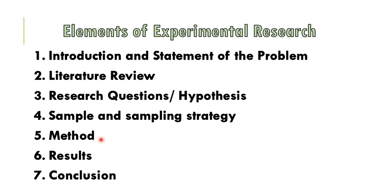Next element is method — the researcher tells how groups and subjects are assigned, for example using pre-test or post-test as the dependent variable and an intervention as the independent variable. Then results — the researcher presents quantitative findings. Finally, conclusion — the researcher states the conclusions drawn from the study.